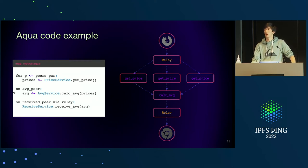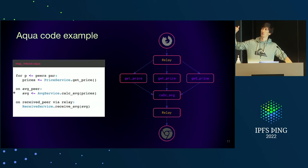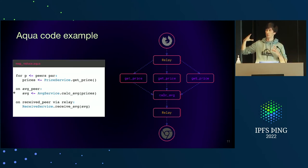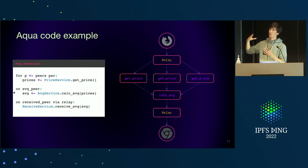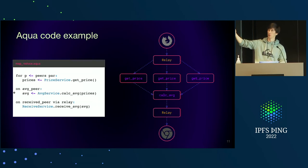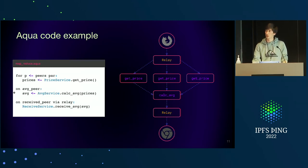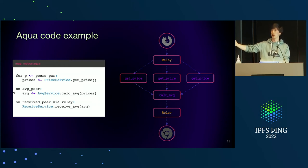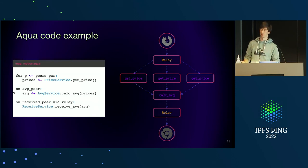For basically every request that happens on the network — like a user clicks a button — the Aqua VM creates a short-living subnetwork that executes this request. All these nodes can discover each other, work together, send functions like 'get price' executed on one node, and then send the result to nodes that calculate the average. After the script is executed, this subnetwork no longer exists. But you can also use Aqua to program long-living subnetworks if you need them to exist for a long period and run scheduled execution.